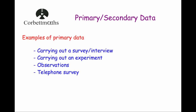Let's look at some places where you may obtain primary data. Primary data may be obtained by carrying out a survey or interviews, by carrying out experiments, by making observations, or by completing surveys — perhaps telephone surveys or even online surveys. Those are examples of where primary data may be obtained.